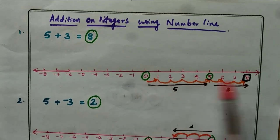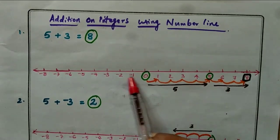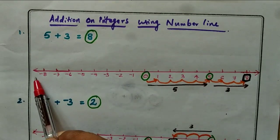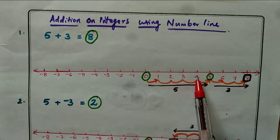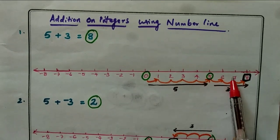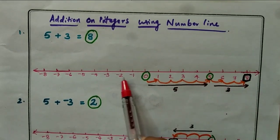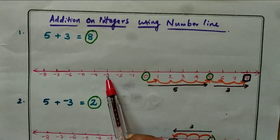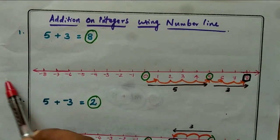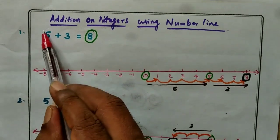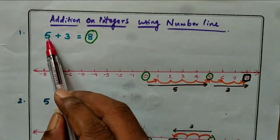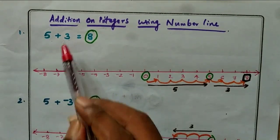On the number line, right is positive and left is negative: 1, 2, 3, 4, 5, 6, 7 to the right, and minus 1, minus 2, minus 3, etc. to the left. For example, 5 is on the number line — we locate 5 first.